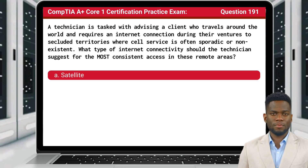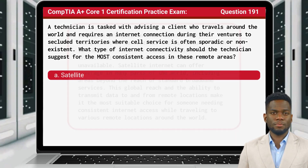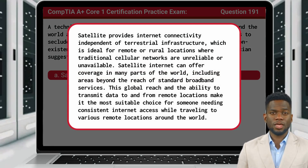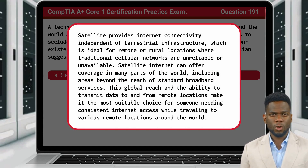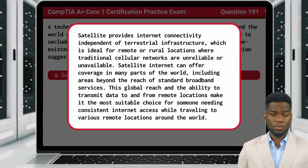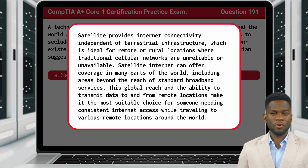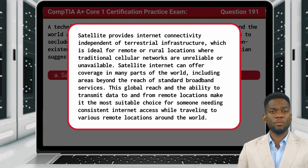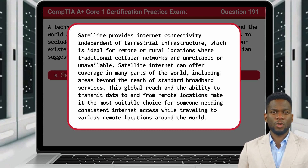The answer is A: Satellite. Satellite provides internet connectivity independent of terrestrial infrastructure, which is ideal for remote or rural locations where traditional cellular networks are unreliable or unavailable. Satellite internet can offer coverage in many parts of the world, including areas beyond the reach of standard broadband services. This global reach and the ability to transmit data to and from remote locations make it the most suitable choice for someone needing consistent internet access while traveling to various remote locations around the world.